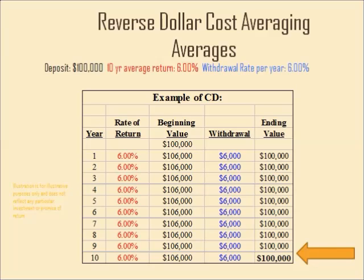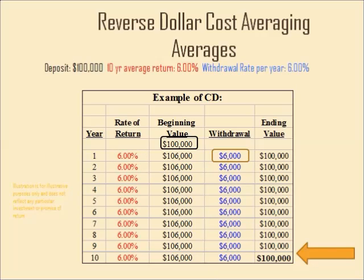The 10-year average return is six percent and your withdrawal rate is six percent. Very simply, you put a hundred thousand dollars in — and I use the term a CD, and I know a lot of folks will ask what bank is paying six percent, but it's just an example. Basically, at the end of the year you get six thousand dollars worth of interest, or six percent, and you can take out the six thousand dollars and still have the hundred thousand dollars left. So as we take our interest out, our principal stays the same.